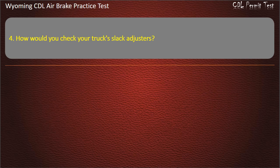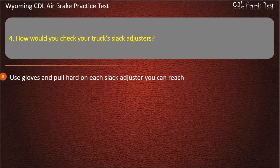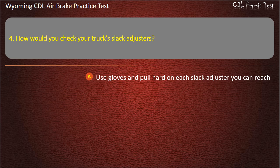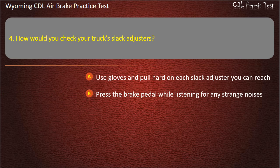Question 4. How would you check your truck's slack adjusters? Use gloves and pull hard on each slack adjuster you can reach. Press the brake pedal while listening for any strange noises. Accelerate, then brake hard. Answer: Use gloves and pull hard on each slack adjuster you can reach.